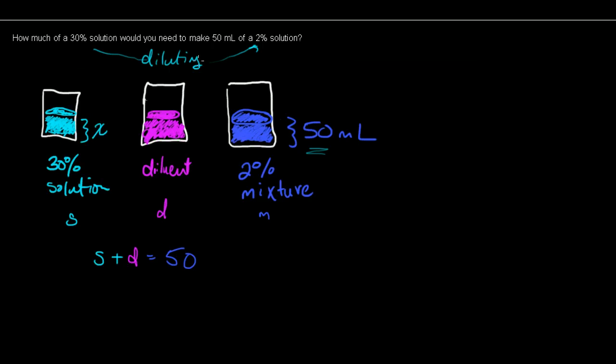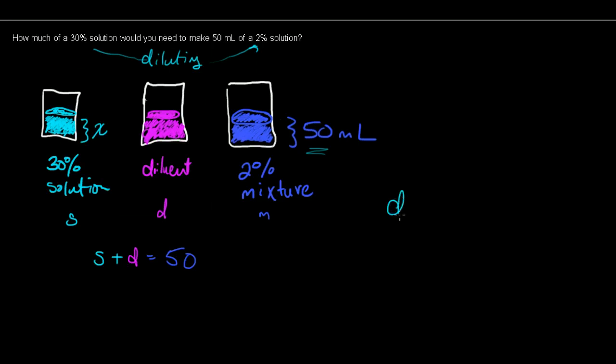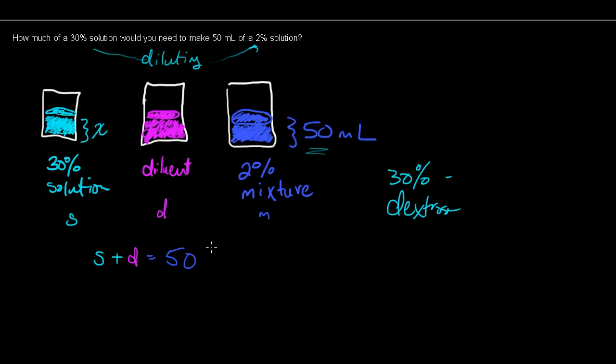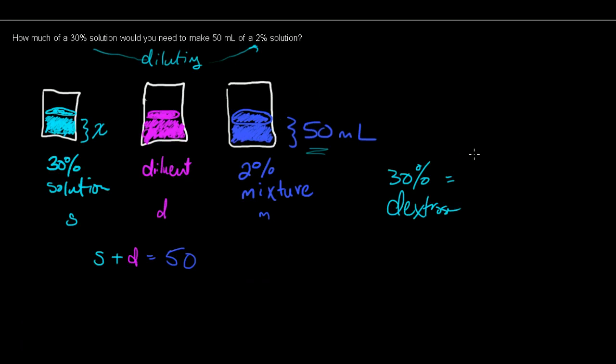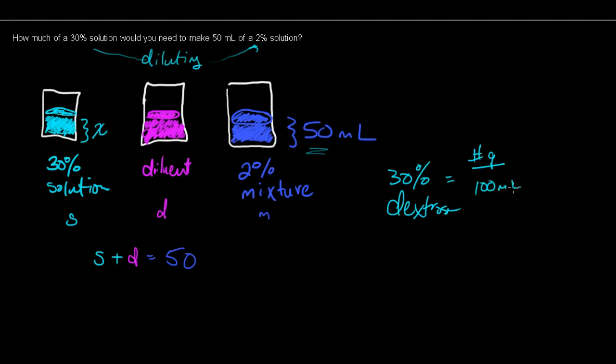So let's say we have a 30% dextrose. So we have our stock is going to be 30% dextrose and we want to dilute it down to 2%. So that means, remember when we're talking about percents in a solution, it'll be the number of grams per 100 ml.